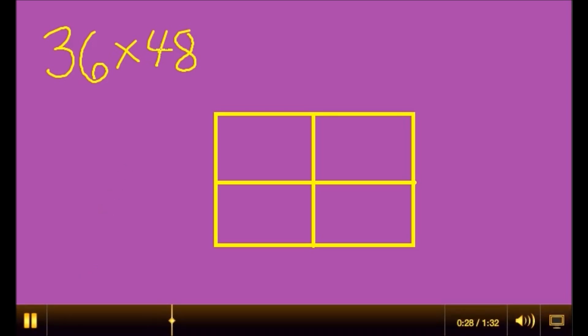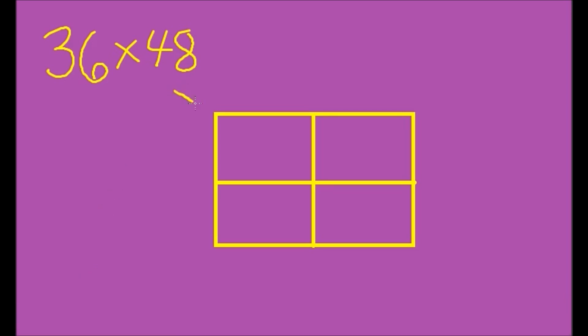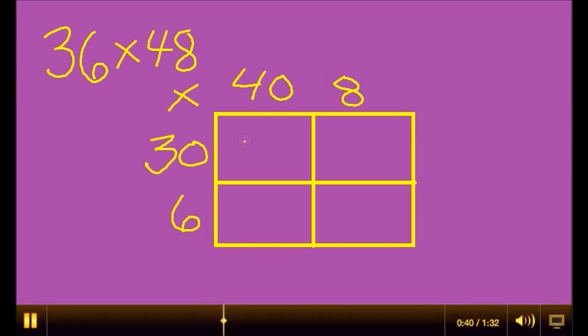Alright, let's see how you did. If you did 36 times 48, you should have broke 36 into 30 and 6, 48 into 40 and 8. You do your partial products.